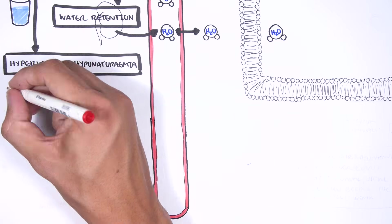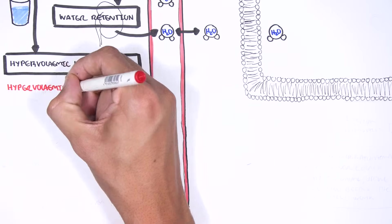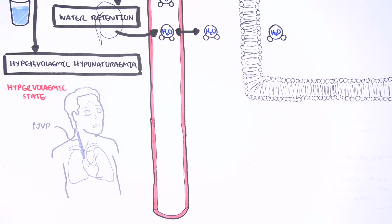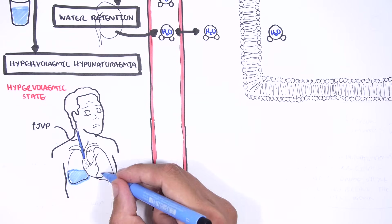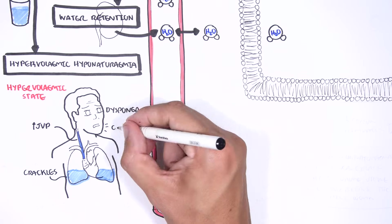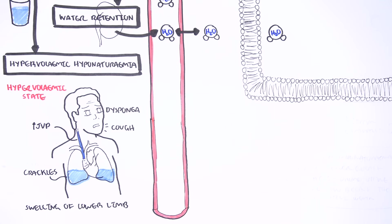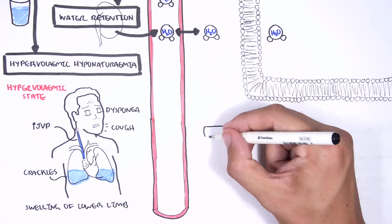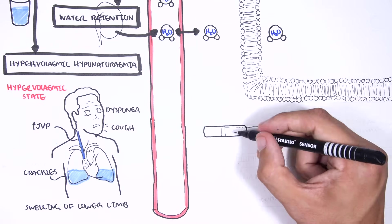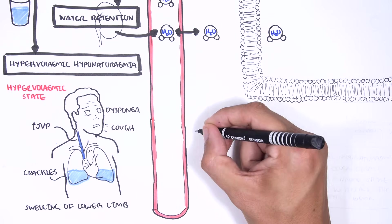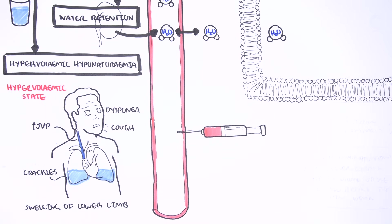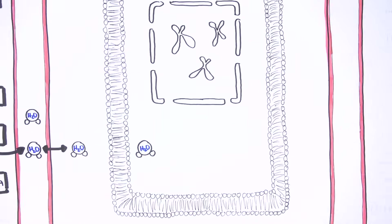Someone with hypervolemia will have elevated JVP, crackles in the lungs, dyspnea, wet cough, and swelling of the peripheral legs. In congestive cardiac failure, the serum osmolality is low because there is no increase in solutes — there is only an increase in water in the extracellular space.